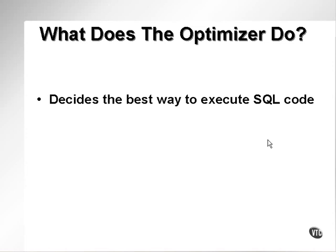So what does the optimizer actually do? What the optimizer does is it makes a decision on the best way to execute a SQL code statement based on input parameters it can gain — in other words, the SQL code statement itself, the existence of statistics, the usability of statistics, how up-to-date they are, and other input parameters such as the cursor sharing parameter.